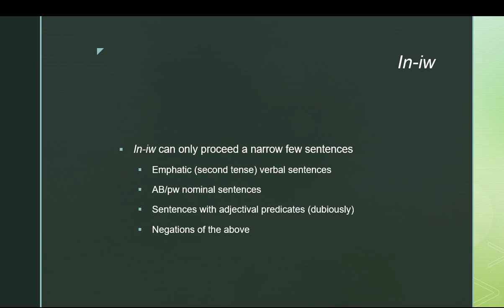Yinyu can only precede a couple of sentence types — in particular, nominal sentences: your AB or your APU type nominal sentences, and also your emphatic verbal sentences or second tense sentences, which are really nominal sentences and can therefore take yinyu. These sentence types are never preceded by yu, so if you see a yin plus a yu, you know it has to be yinyu. It's also possible that yinyu is used in Middle Egyptian for sentences with adverbial predicates, though there is some debate on this — whether the examples found actually represent this phenomenon or are ambiguous or late Egyptian.